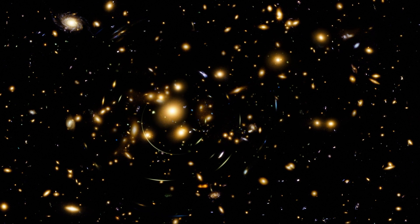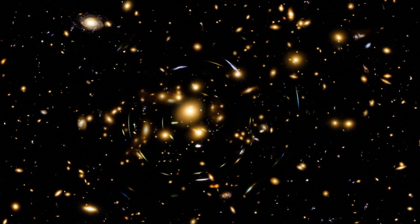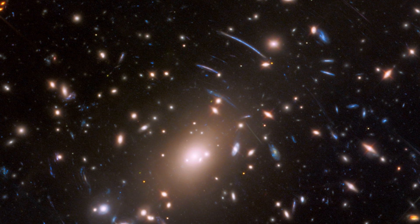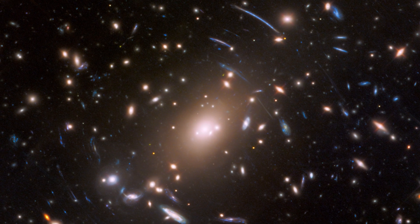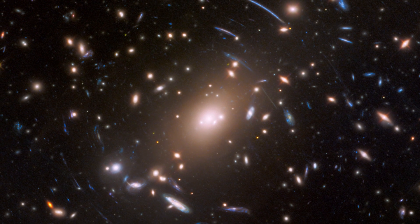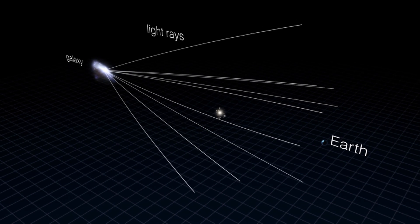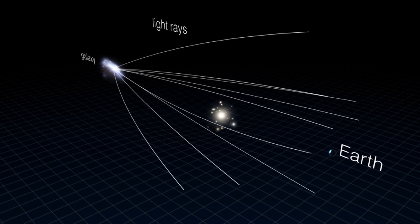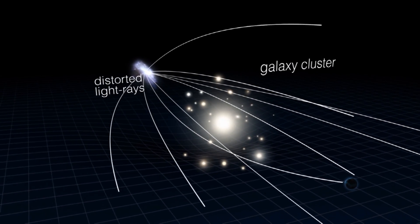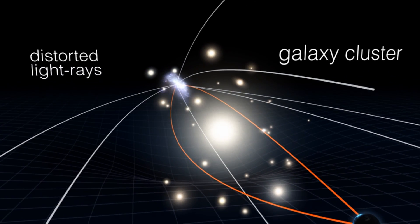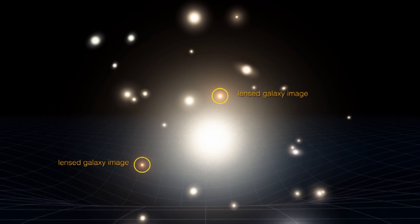The strong gravity of a massive object, such as a cluster of galaxies, warps the surrounding space, and light from distant objects travelling through that warped space is curved away from its straight-line path. When light from a distant galaxy is bent around a cluster of galaxies between it and us, we see multiple images of the galaxy, each with a characteristically distorted shape. These shapes can appear as lines, banana-shaped arcs, and even rings.